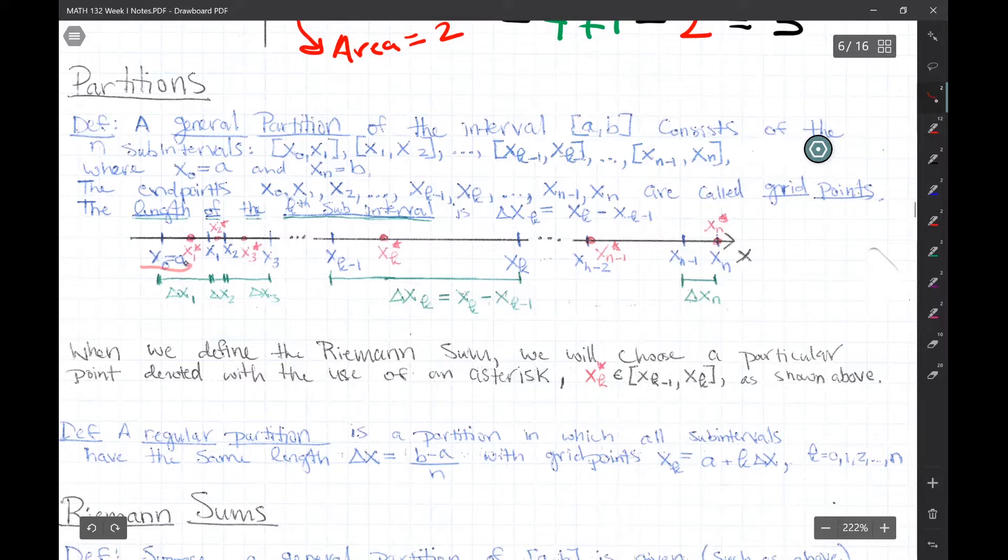So this is beginning at a over here and ending at xn equal to b. So let's set that equal to b.